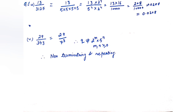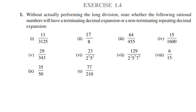In the same way, for 29/343: the denominator is 7³, which is not of the form 2ᵐ × 5ⁿ where m and n ≥ 0. So it is non-terminating and repeating. In this way, you can solve all parts of question number 1, and you can also try question number 2 and question number 3 of this exercise.